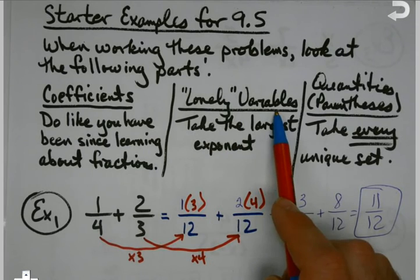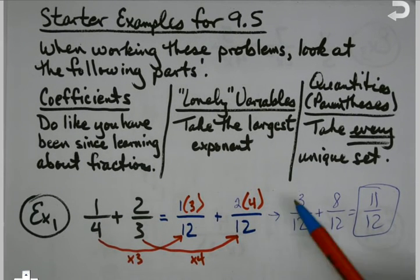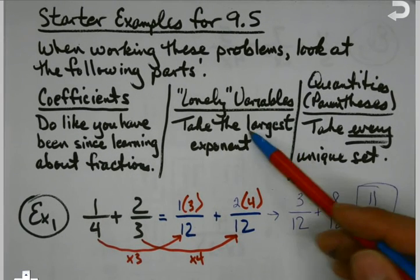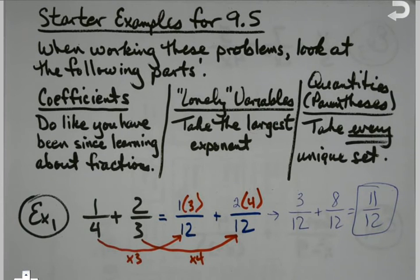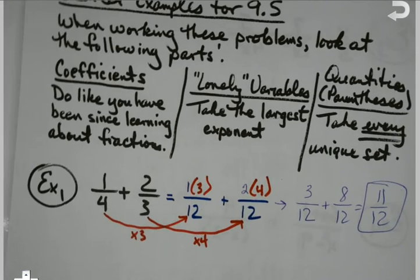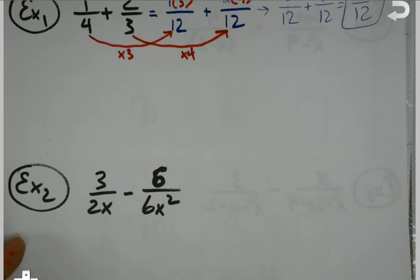Now we're going to start bringing in variables and quantities. When you see variables that are lonely, in other words they don't have a plus or minus bonded to them, we're going to take the largest exponent. Quantities, when you see sets of parentheses, you take every unique set, and we'll get to that here in a couple of examples.